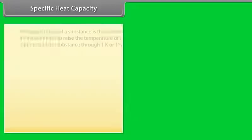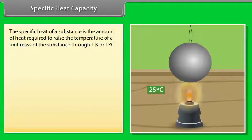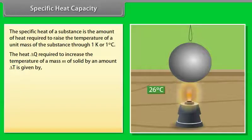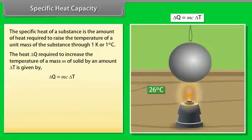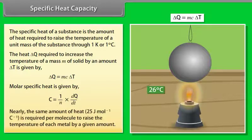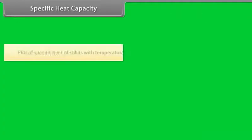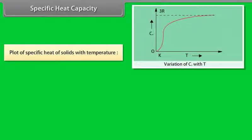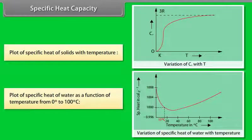Specific heat capacity. The specific heat of a substance is the amount of heat required to raise the temperature of a unit mass of the substance through 1 Kelvin or 1 degree Celsius. The heat ΔQ required to increase the temperature of mass M by an amount ΔT is given by ΔQ = McΔT. Molar specific heat is given by C = (1/N)(dQ/dT). Approximately 25 J·mol⁻¹·°C⁻¹ is required per mole to raise the temperature of each metal by a given amount. The variation of specific heat of solids and water with temperature is shown in the given graphs.